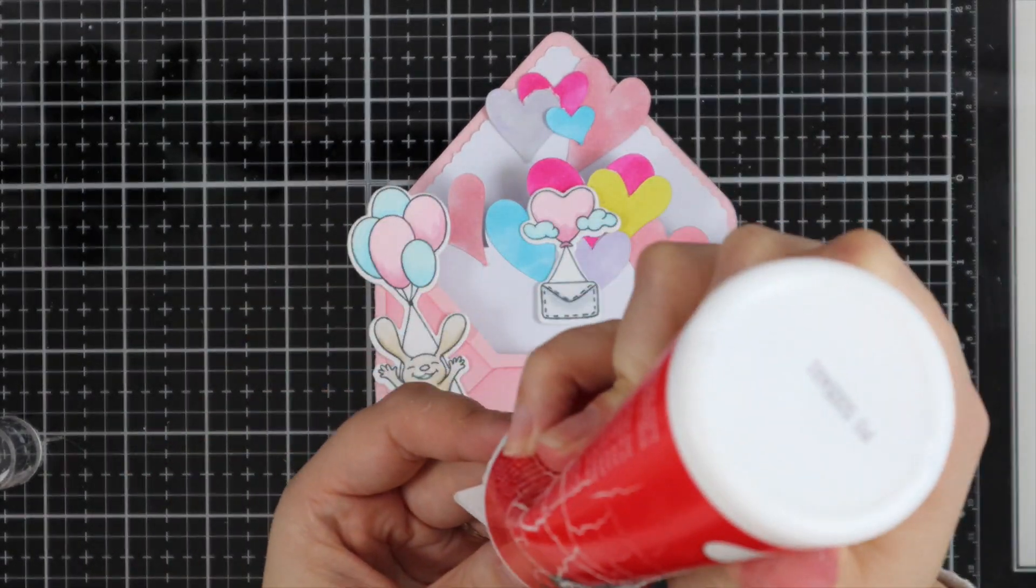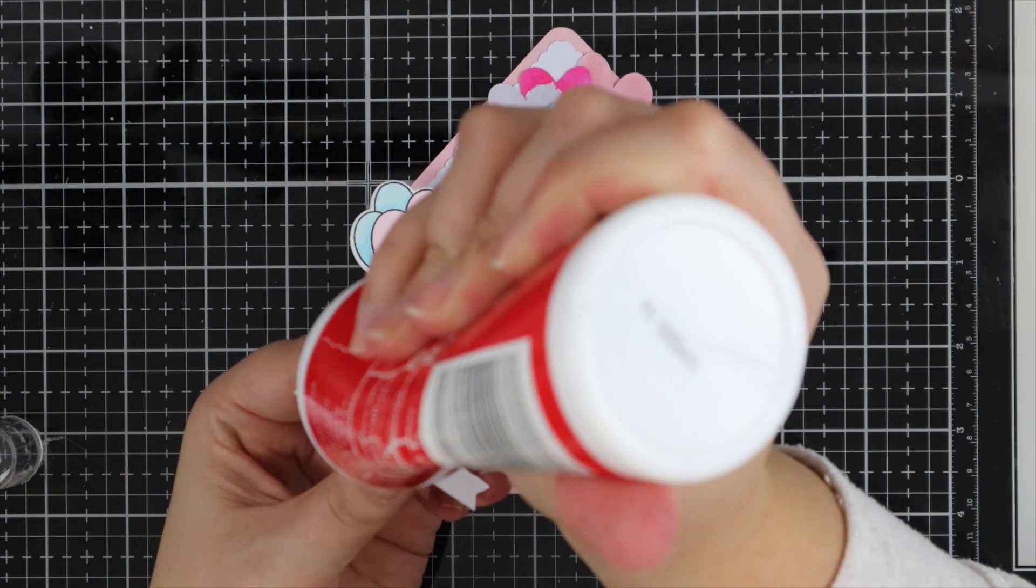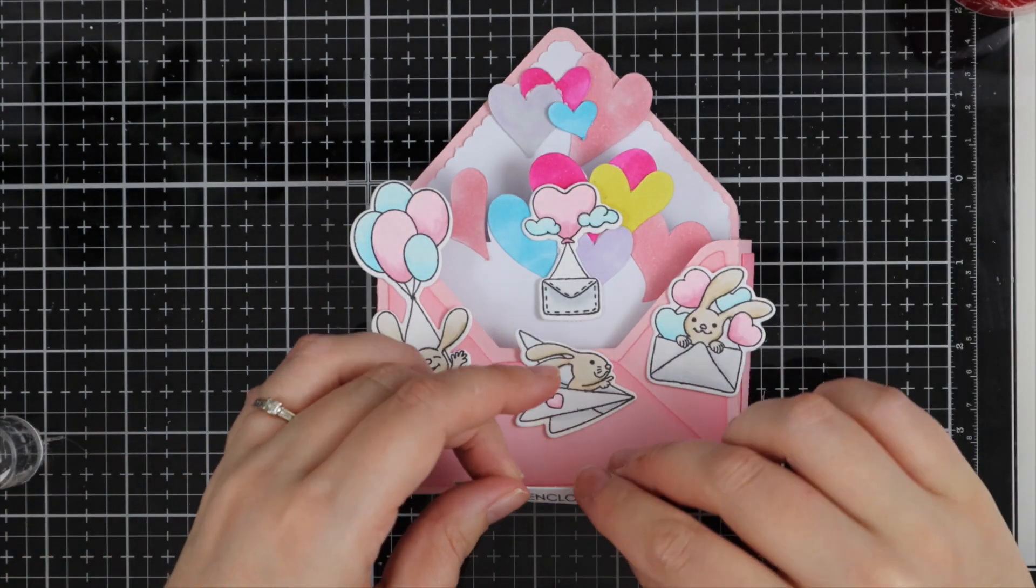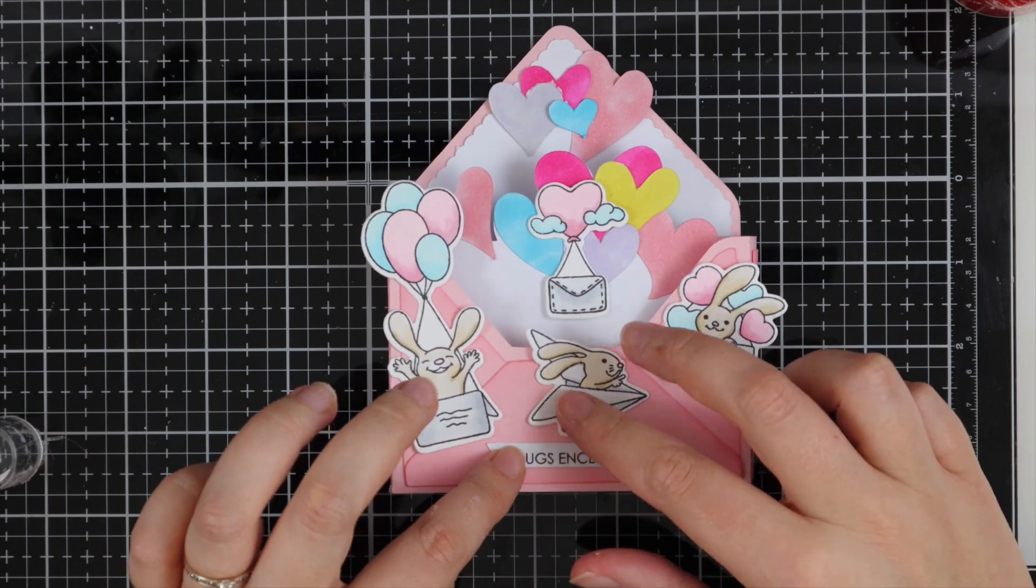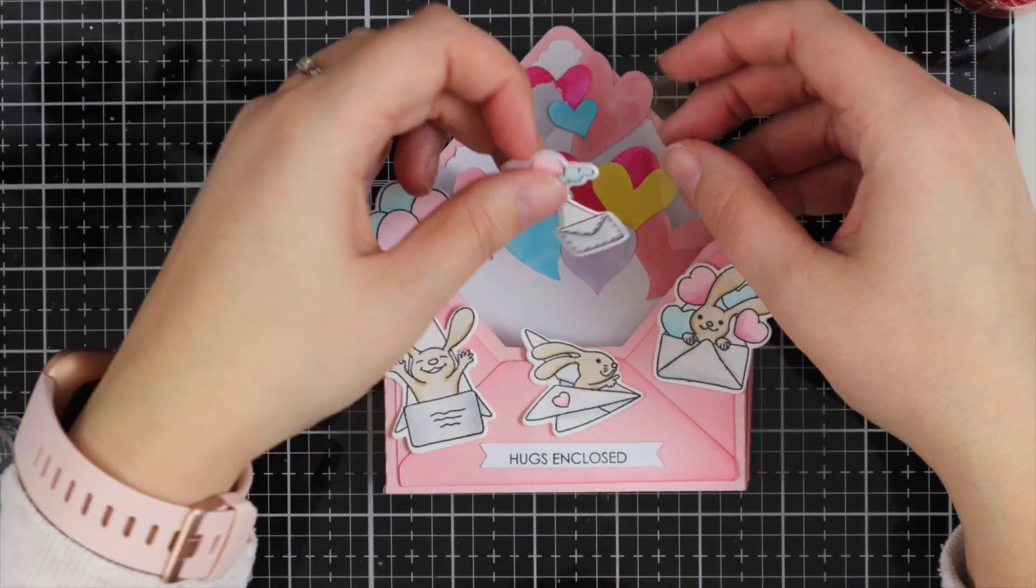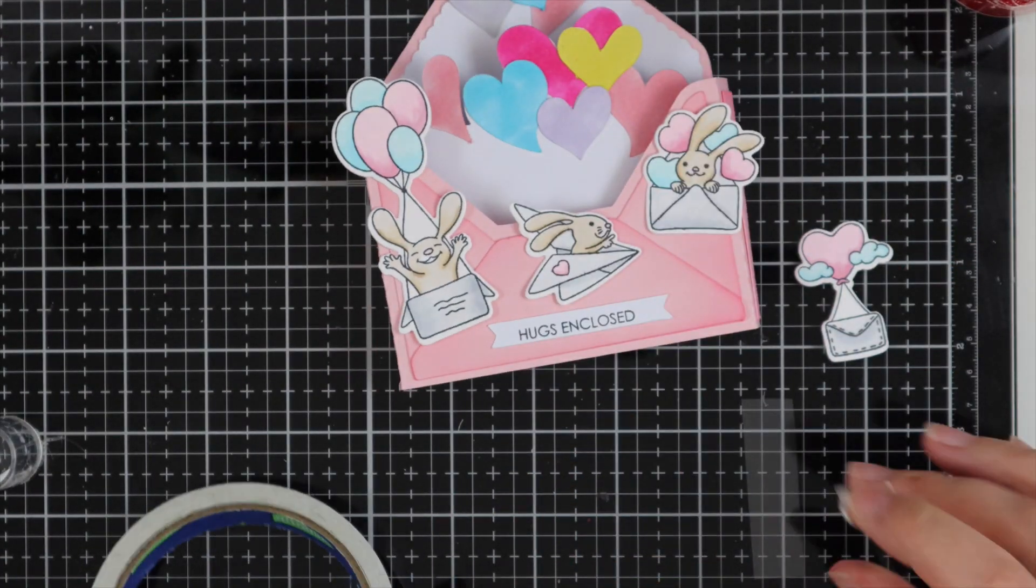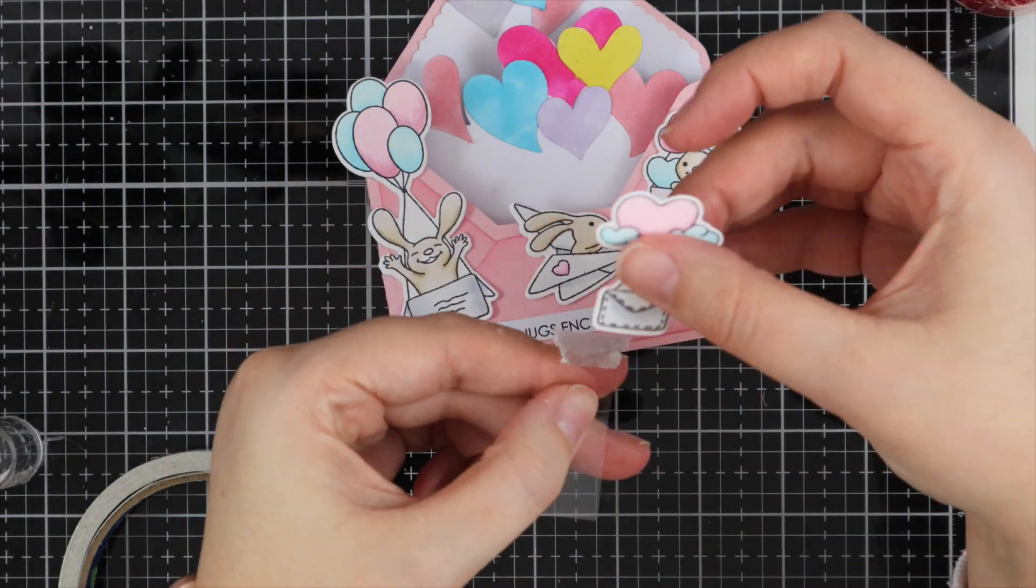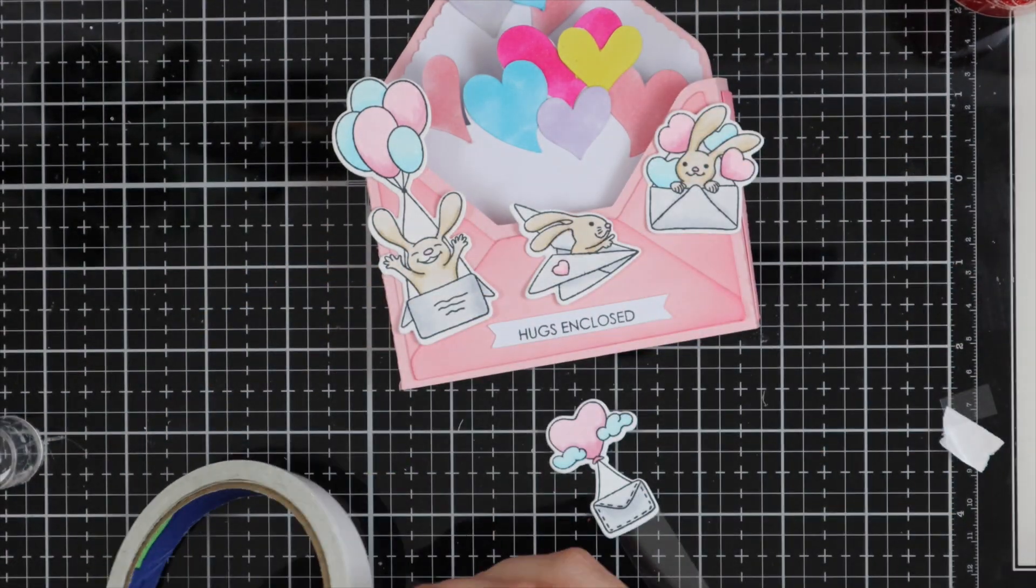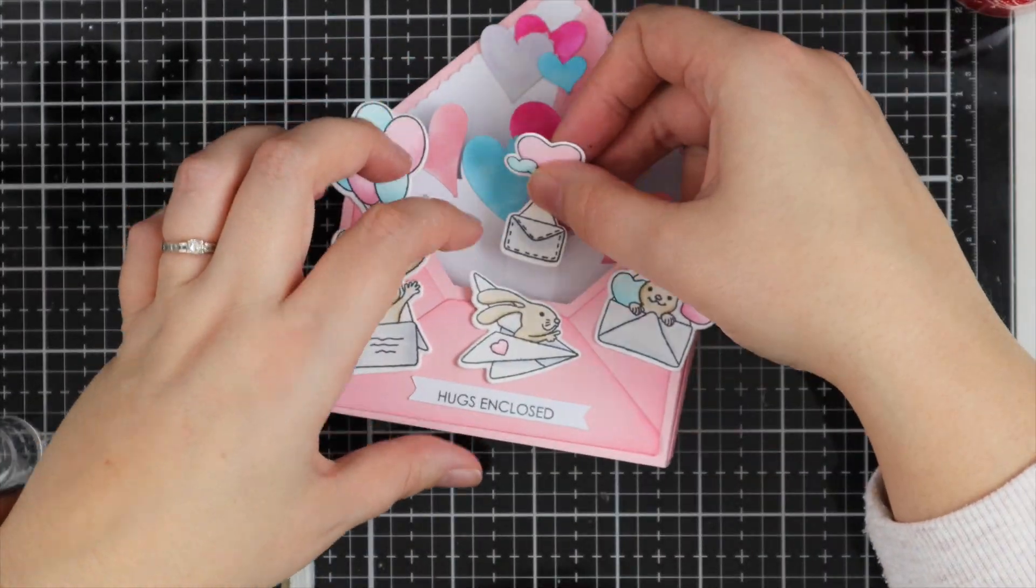And then I wanted that little stamp that has the floating envelope with the cloud around it. I wanted to use some acetate. So once I've got everything adhered down, I've just trimmed off a little strip of acetate, and I'm just going to use some double-sided tape to adhere the top part. And then I also put the tape at the bottom part, and then I'll just push this in to make it look like it's floating.